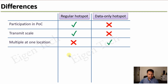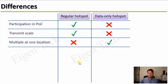The next point is whether you can have multiple hotspots at one location. It is not a good idea to place multiple regular hotspots in the same location because your transmit scale will go down, and it's not good for the network. That's why they penalize people for putting multiple hotspots at one location. However, this is not true for data-only hotspots — you can place as many as you want because there is no concept of transmit scale for a data-only hotspot.